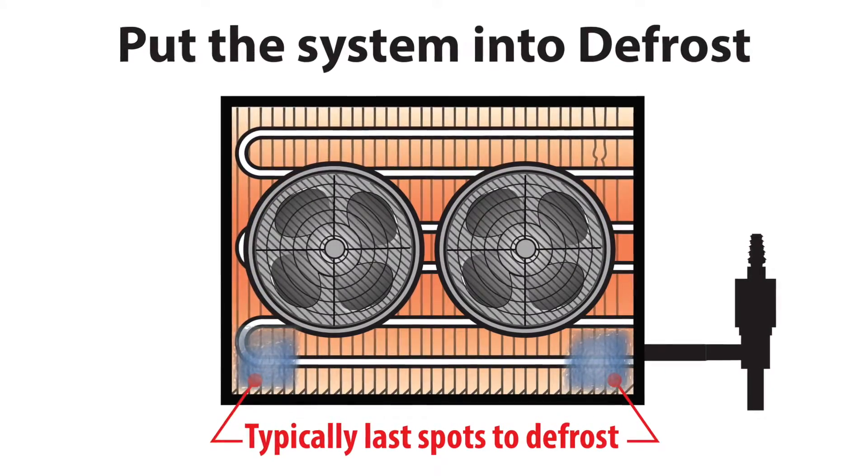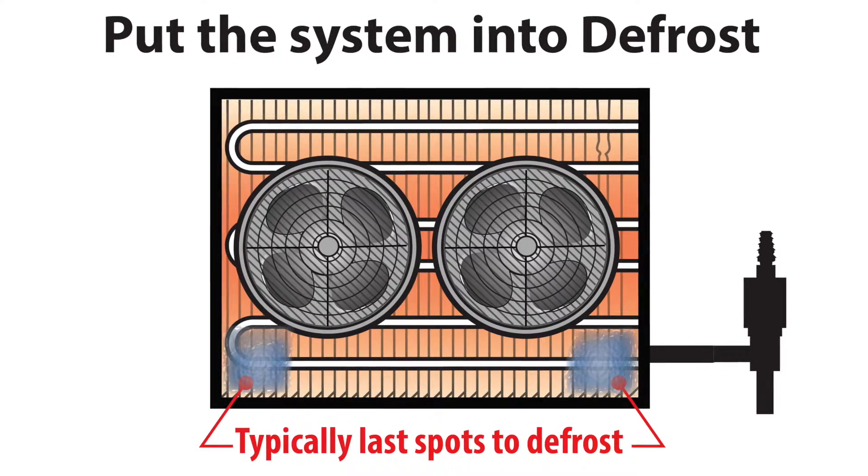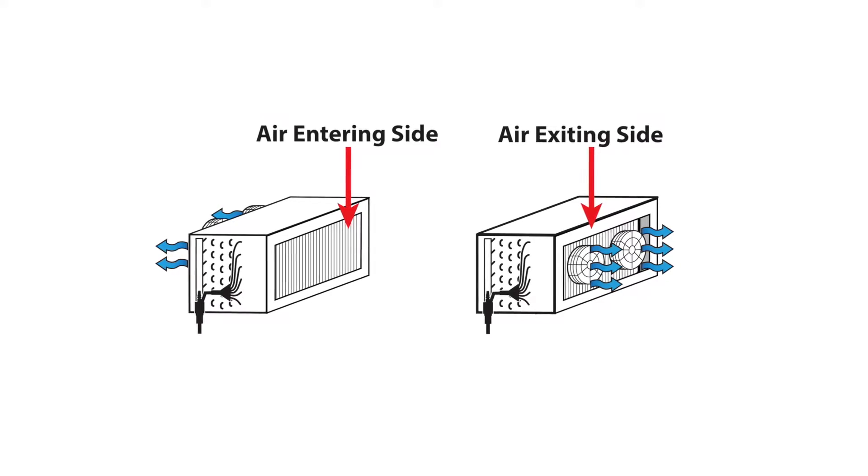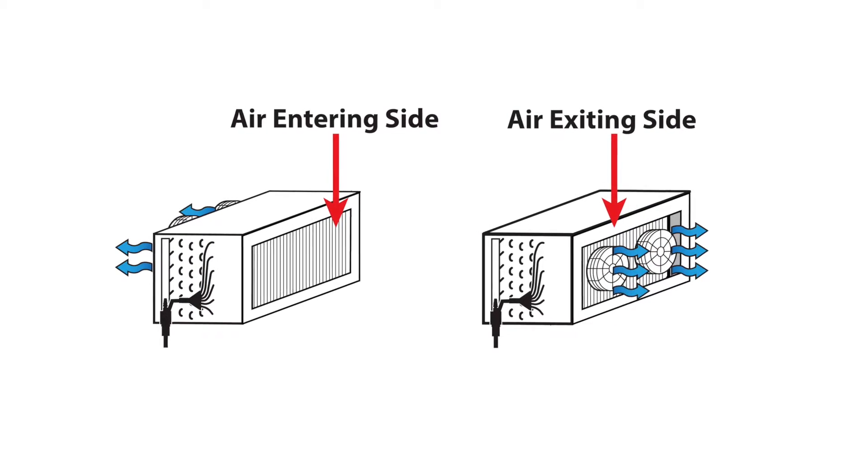Specifically, the last place frost disappears during the defrost cycle is the correct coil sensor location. When viewing the frost pattern, monitor both the air entering side as well as the air exiting side of the evaporator coil.